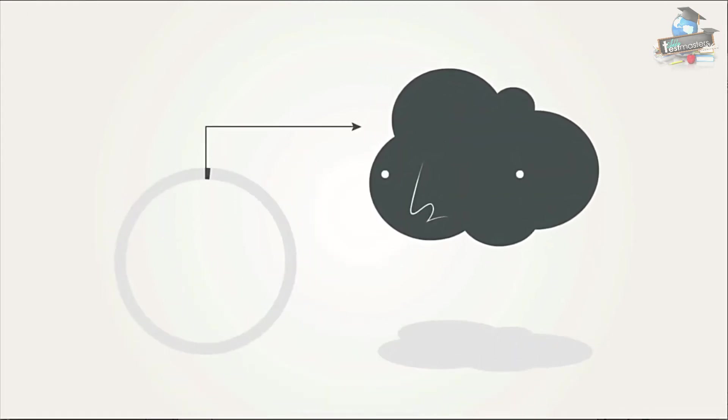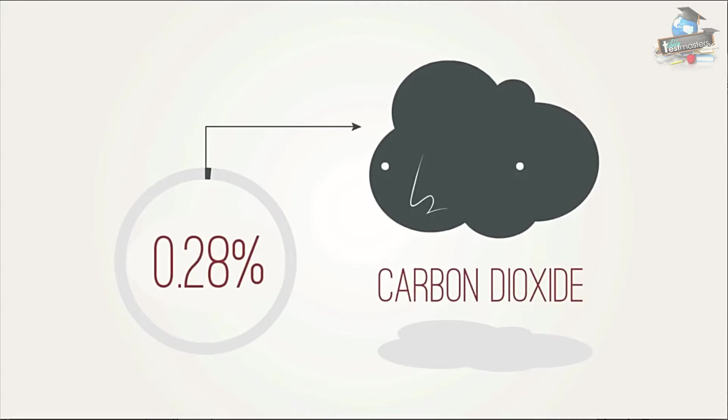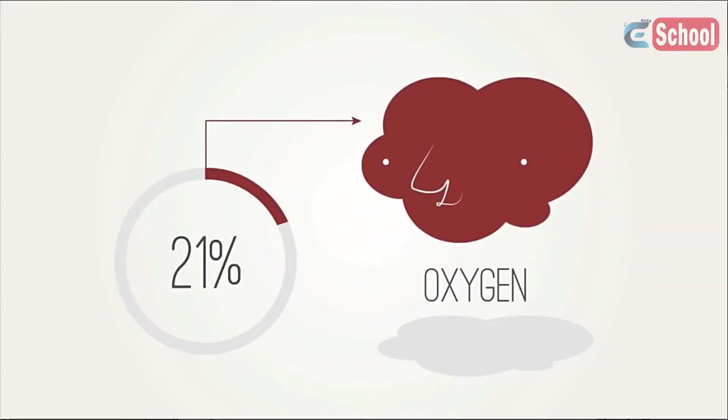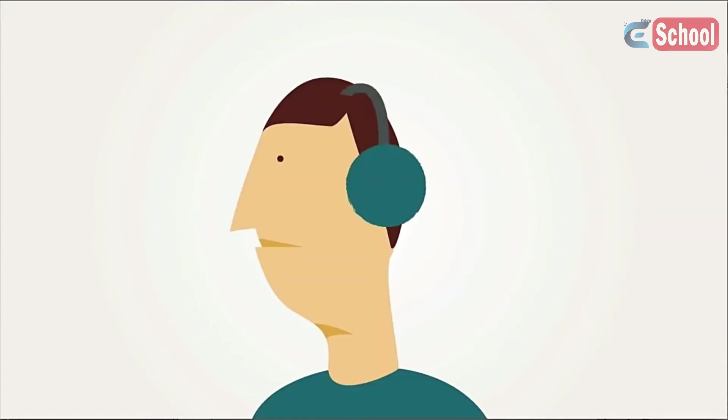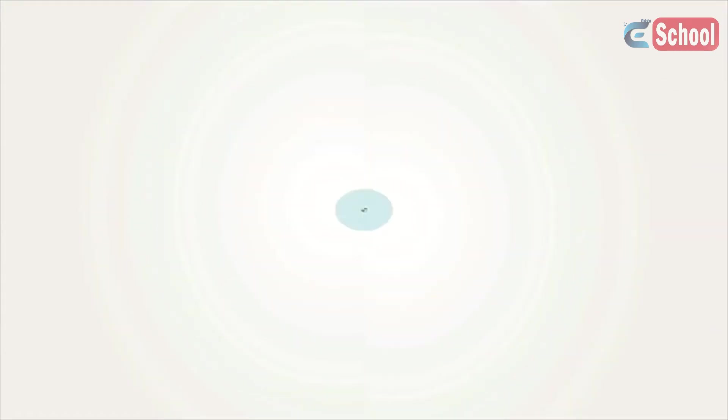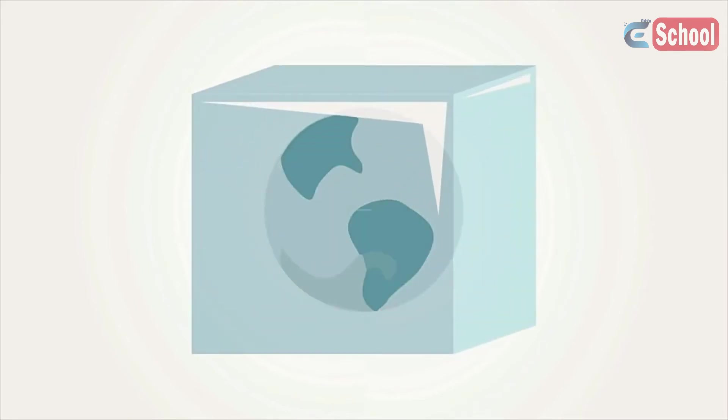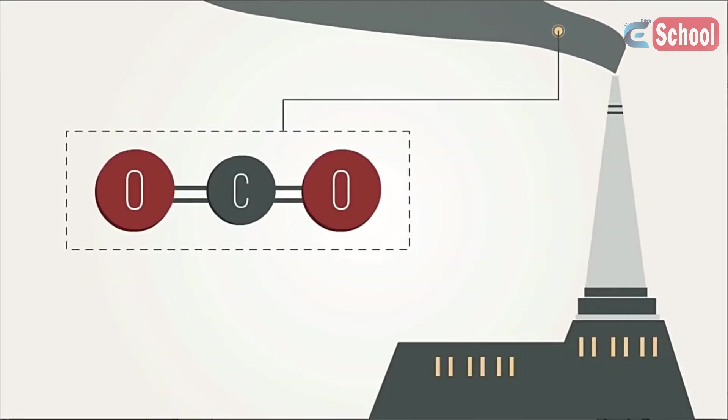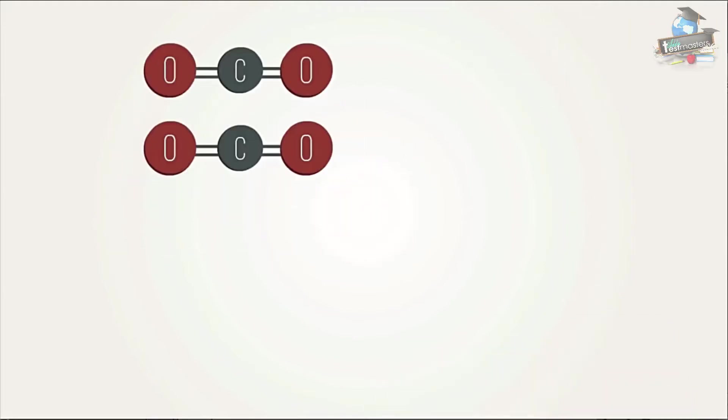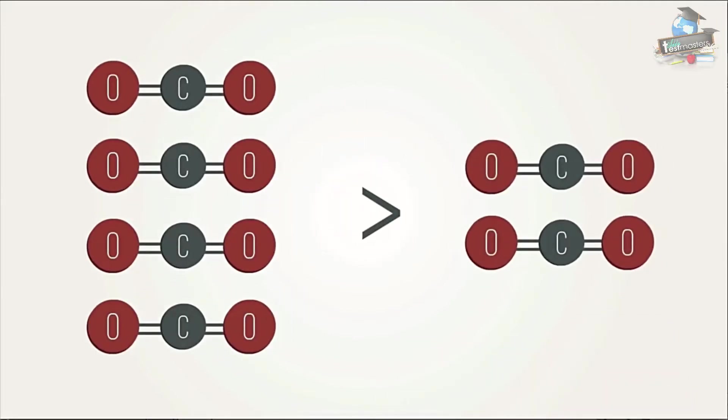Before the world became industrialized by burning fossil fuels, carbon dioxide concentration in the atmosphere was about 0.28%, tiny compared with oxygen at 21% and nitrogen at 78%, but enough to keep us warm. Without this natural blanket of insulating gas the earth would be too cold to support life as we know it, but this carbon dioxide released when fossil fuels burn adds to the existing carbon dioxide levels which are now nearly 50% higher than in pre-industrial times.